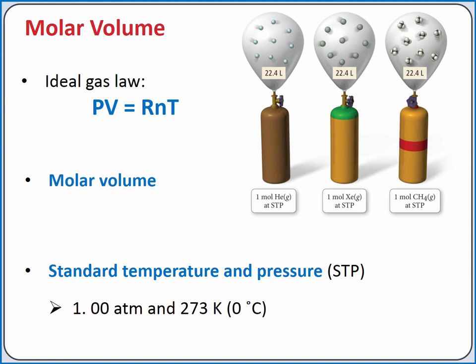In our ideal gas law, we don't have a variable to distinguish one gas from another. For example, one mole of helium, xenon, or methane gas would each occupy the same volume at the same temperature and pressure.